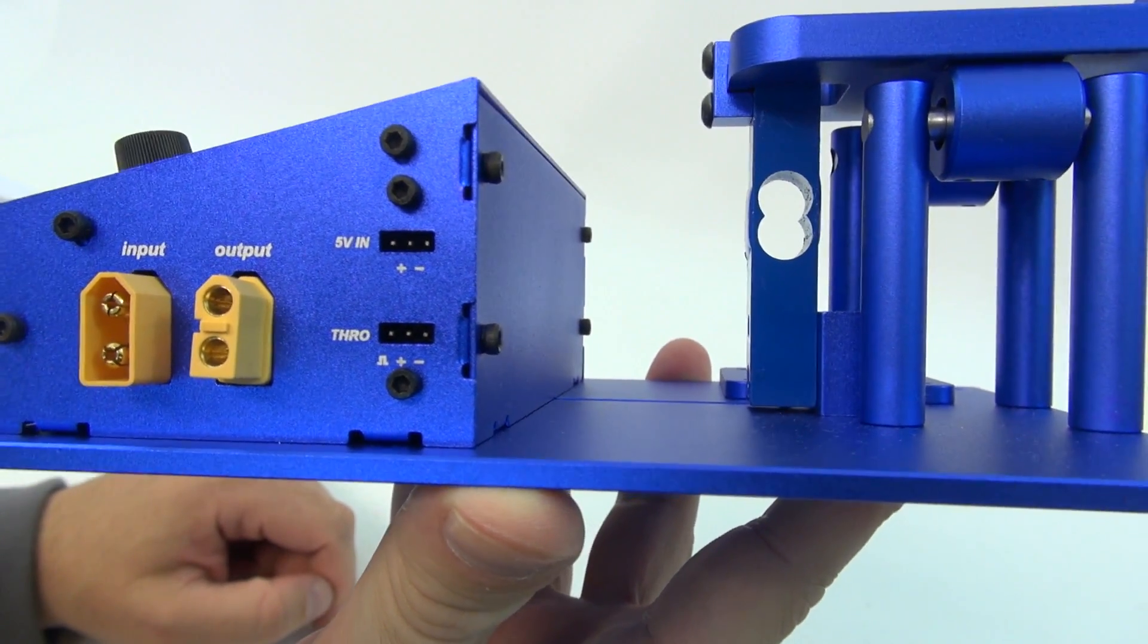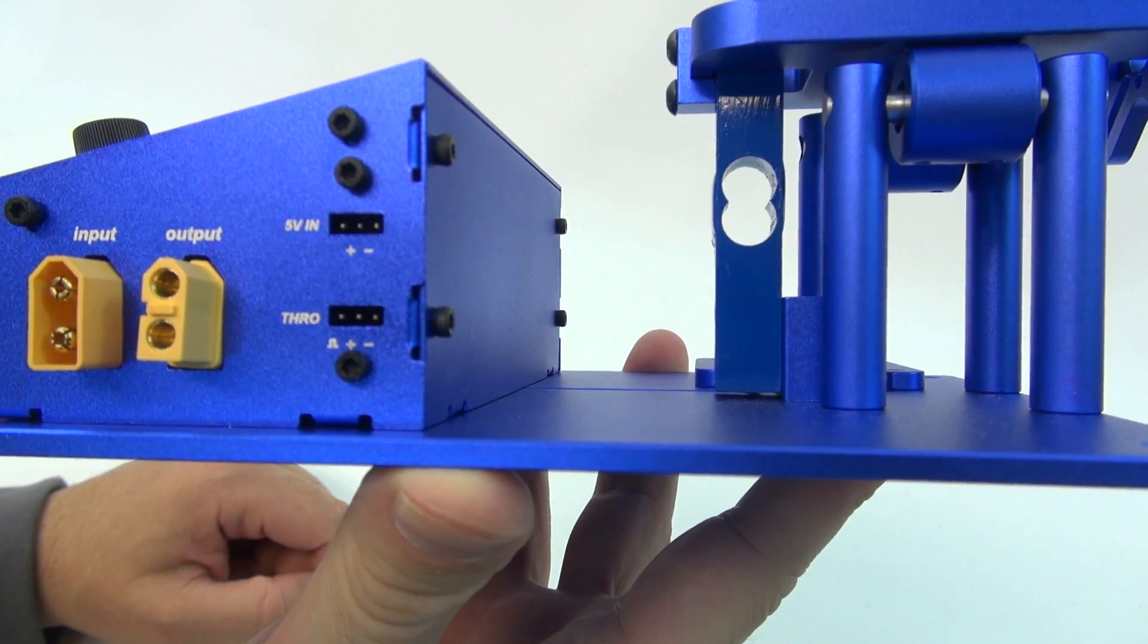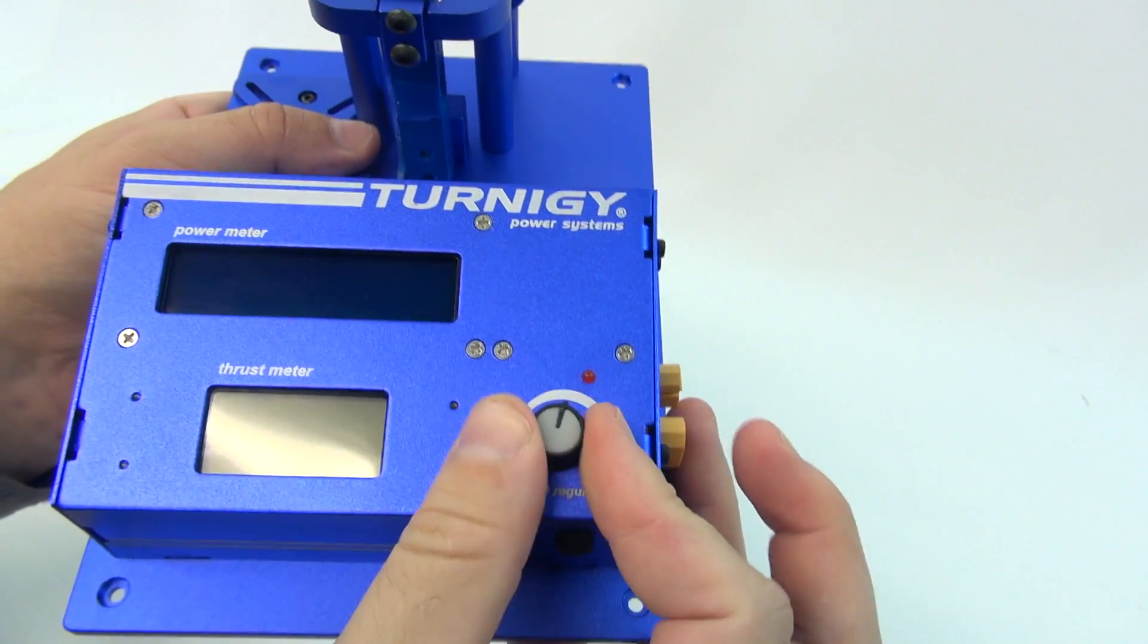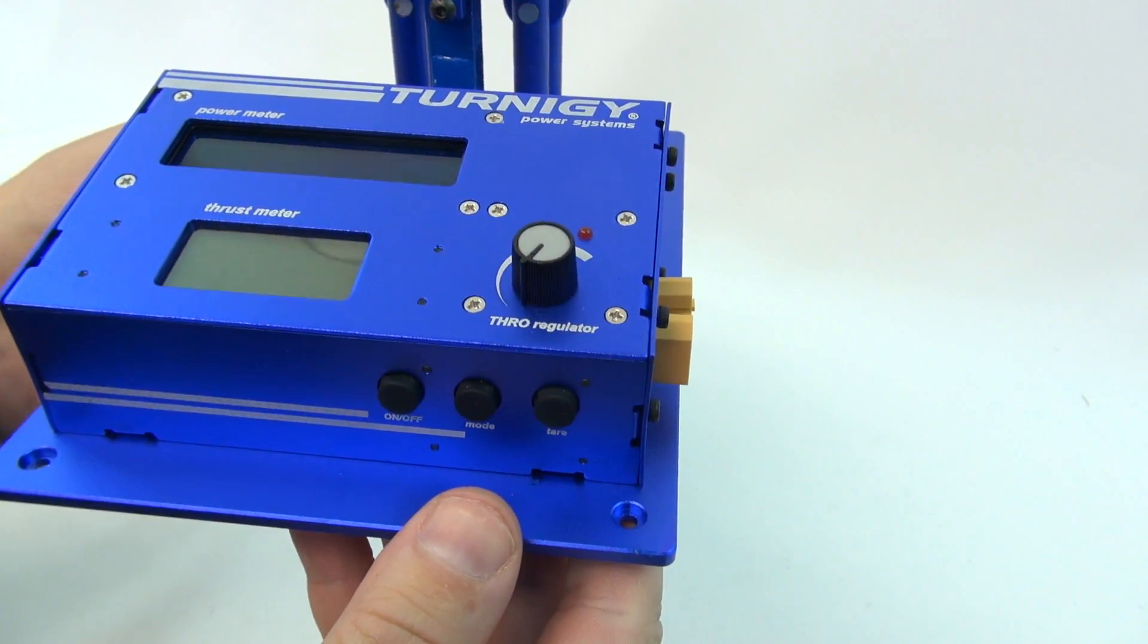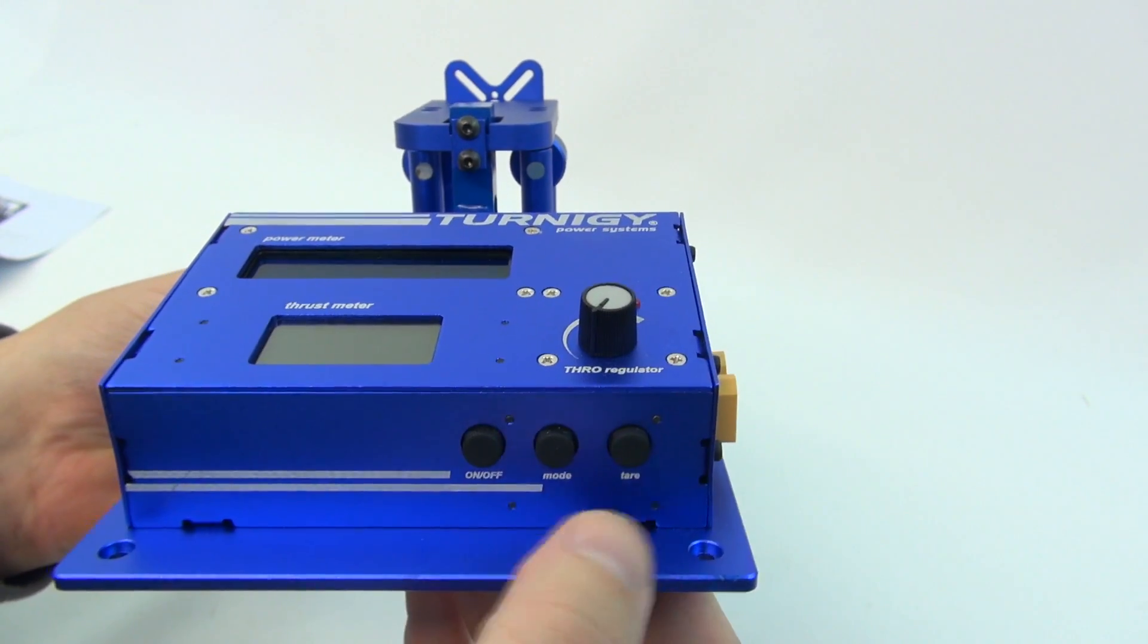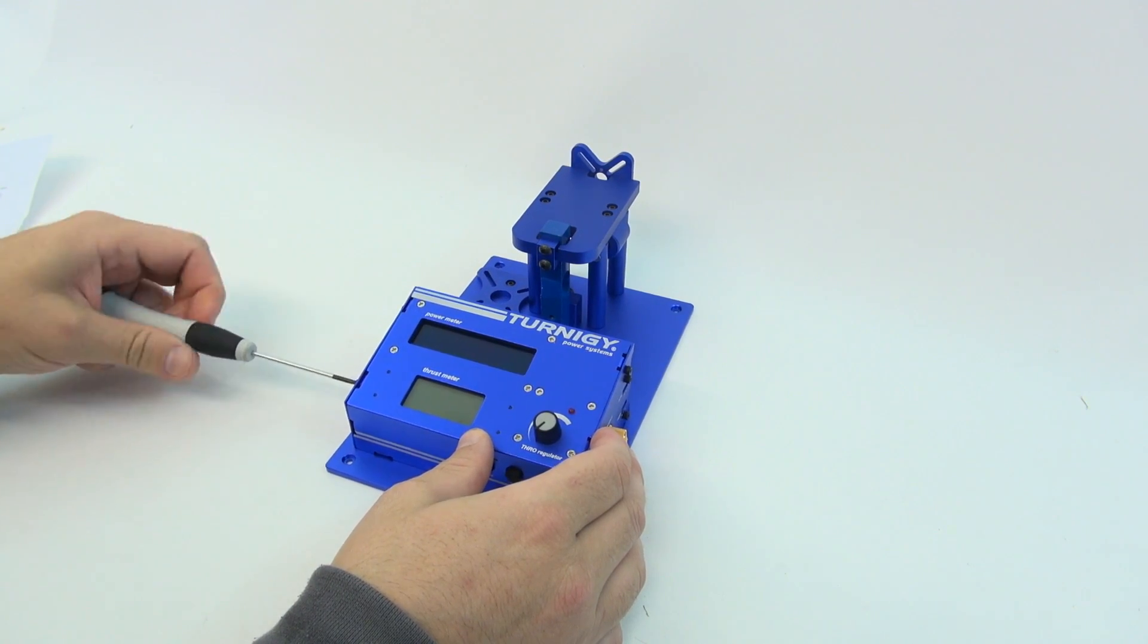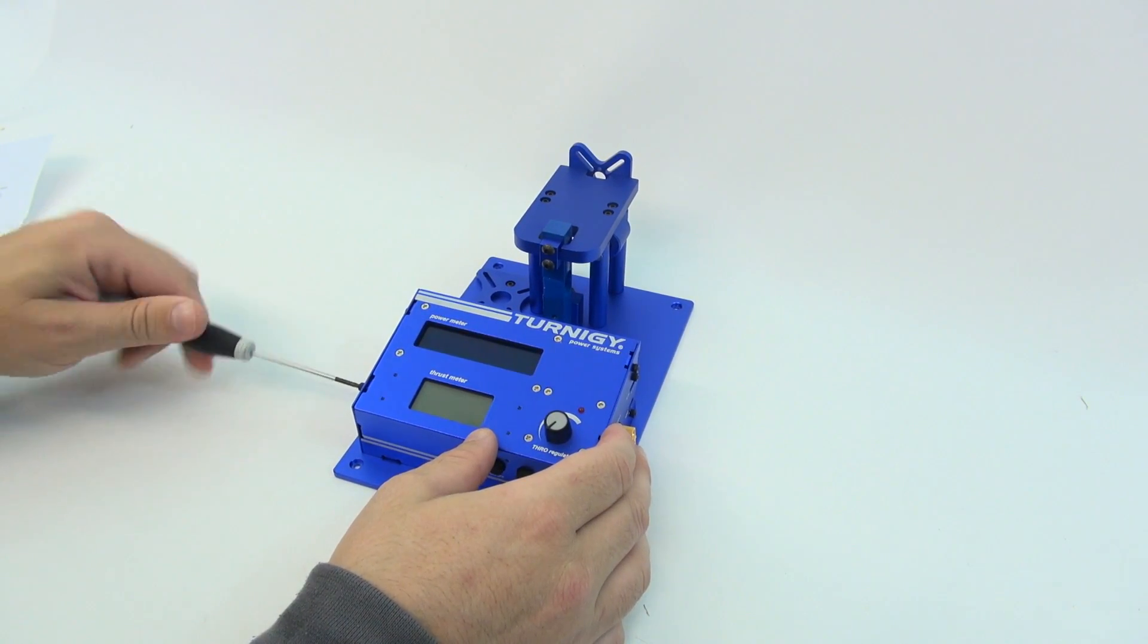So on the side we've got an input and output, 5V in and a throttle. On the top we've got our dial for the power, on, mode, and tare. So let's get some batteries in it. I think we need to go in through the side here with these 2mm screws.